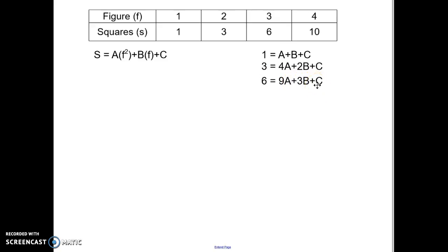Now I need to solve this system of equations to find the values of a, b, and c. I start with the first two and look for the easiest variable to cancel out between all three equations, and that would be c because they all have the same constant. So 1 equals a plus b plus c, and then 3 equals 4a plus 2b plus c.